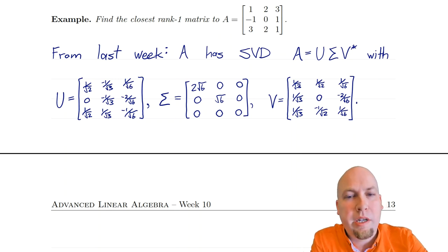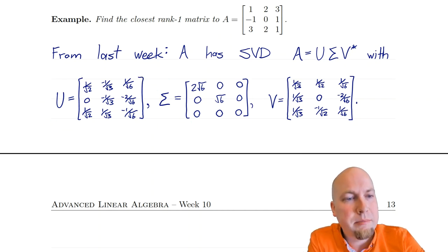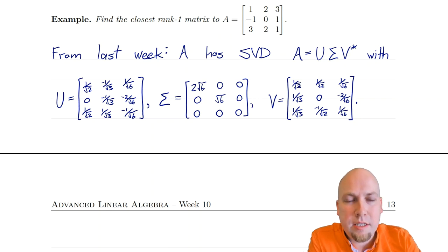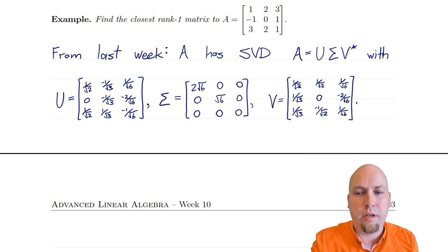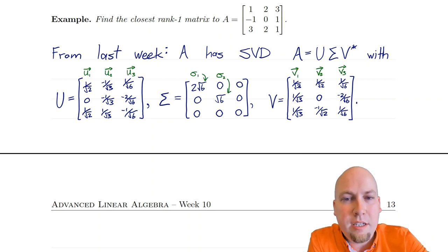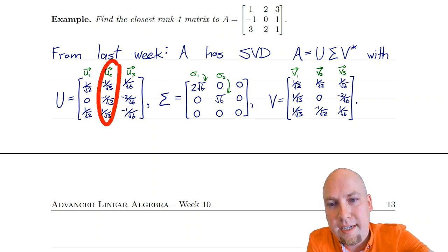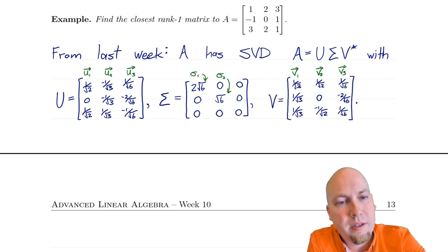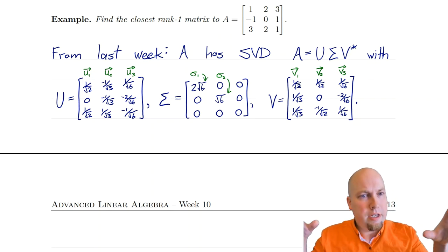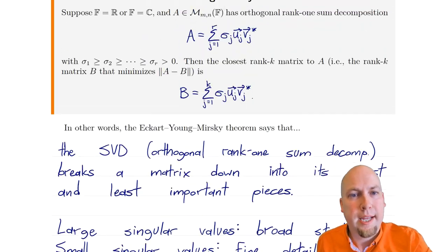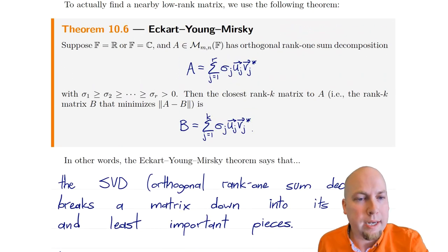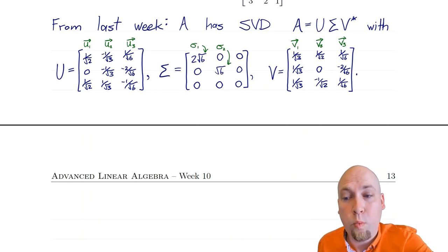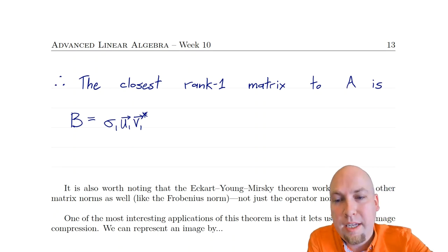Here is the SVD we computed: the unitary matrix U on the left, the diagonal matrix sigma in the middle, and the unitary matrix V on the right. To compute the closest rank-one matrix, we use the orthogonal rank-one sum decomposition by naming the columns of U and V: U_1, U_2, U_3 and V_1, V_2, V_3. Sigma_1 is the first diagonal entry, sigma_2 the second. The closest rank-one matrix is simply sigma_1 times U_1 times V_1 star.